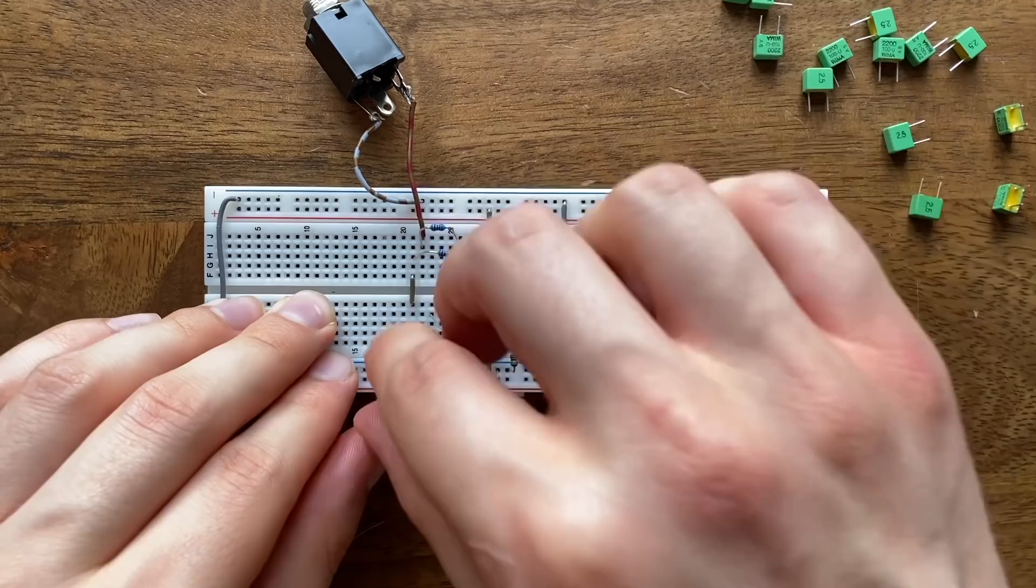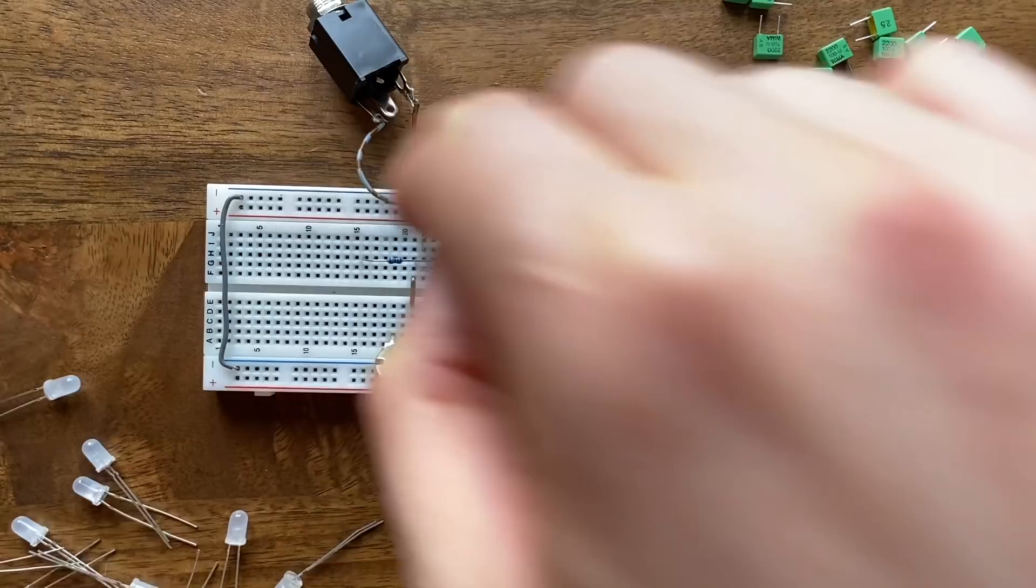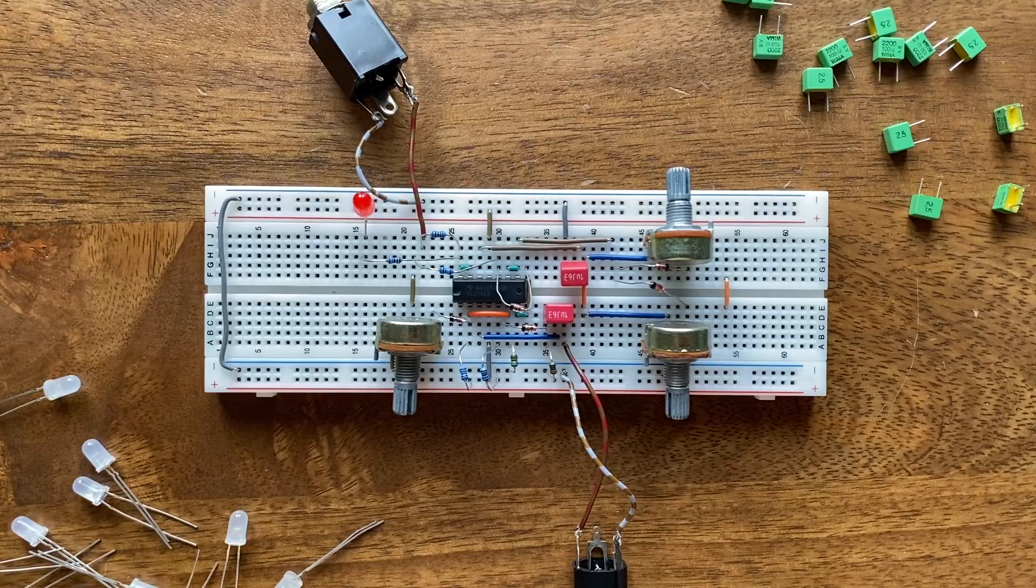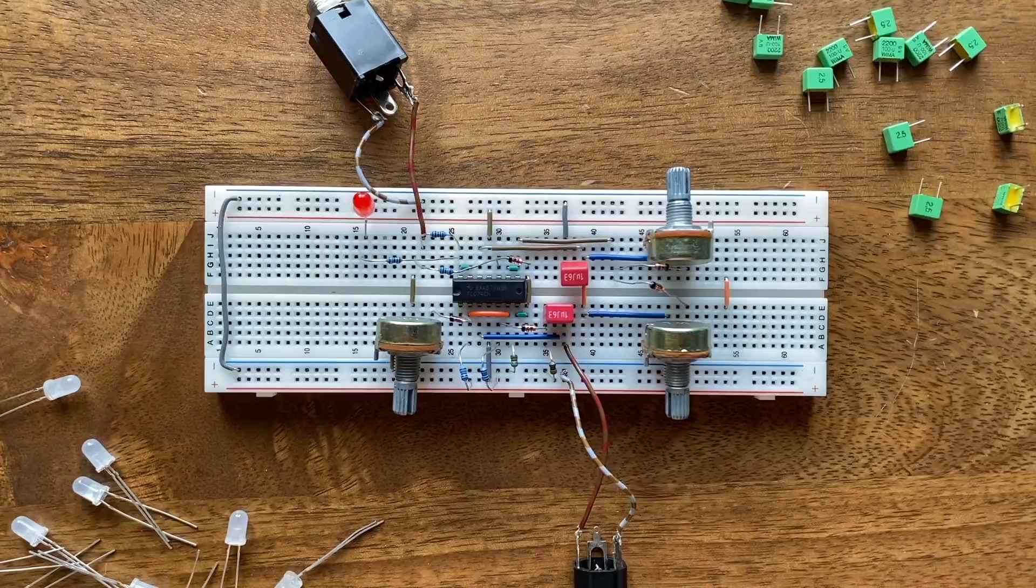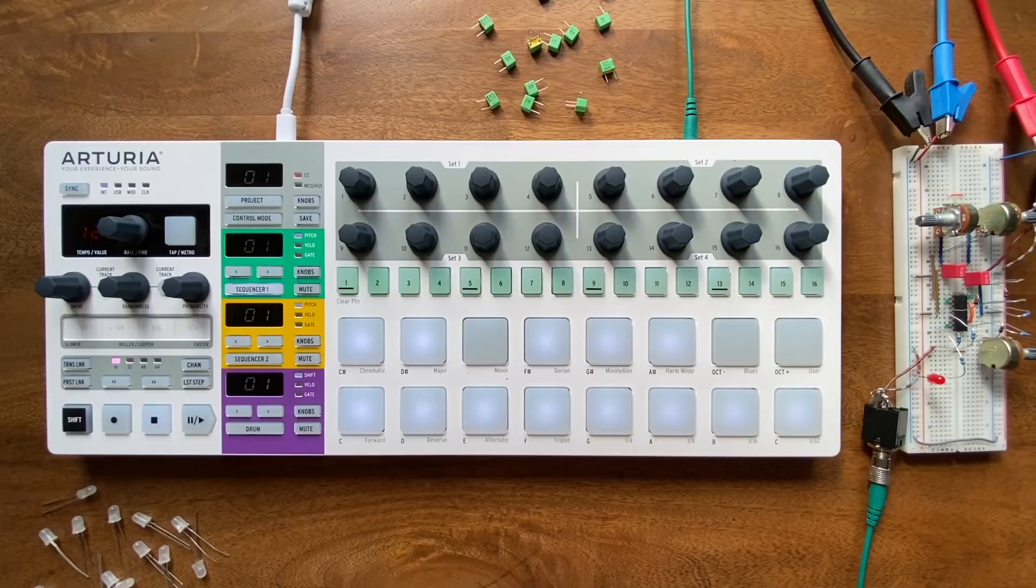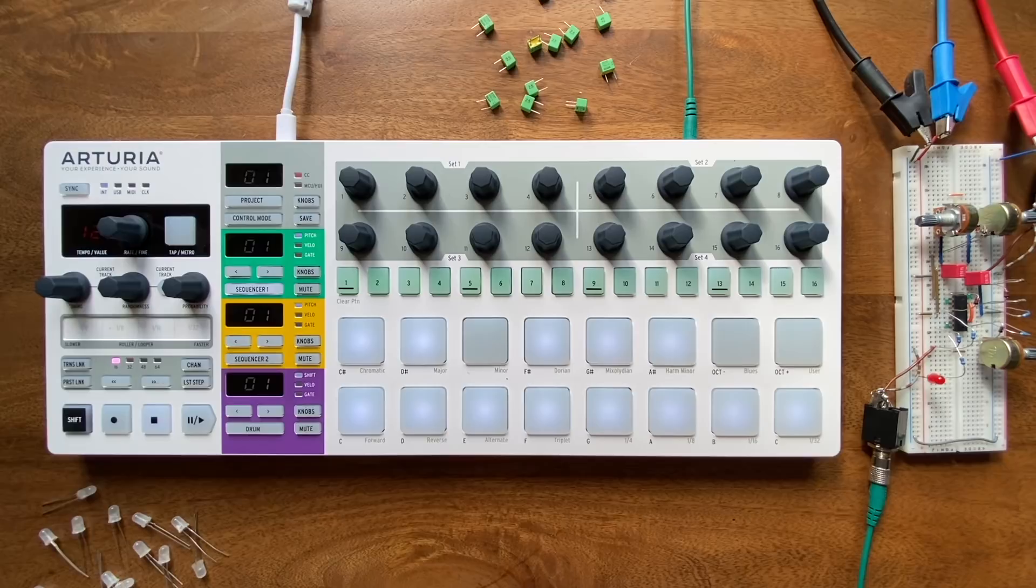All done. For demonstration purposes I'll also connect an LED to the envelope's output so we can see what's going on. If you try this, make sure to put a big enough resistor before that LED. A 2k should do the trick. So let's give this a try. To start out I'll trigger the envelope manually again by pushing one of these pads. I've dialed in a very fast attack, a short to medium decay and release, and a 50% sustain level. Here's what that sounds like.